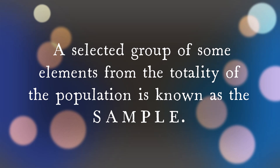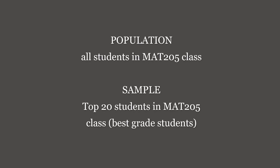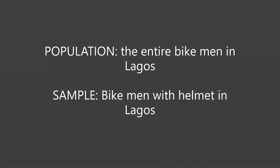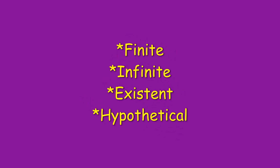When you select a group of elements from the totality of a population, this is known as a sample — a subset of the population. For example, all students in this class (Math 205) form the population, while the top 20 students would be the sample. Similarly, the entire population of bike men in Lagos is a population, while bike men who wear helmets are a sample — a subset of that population.